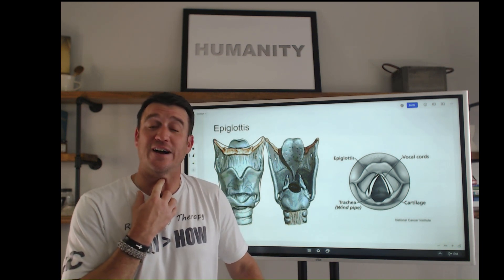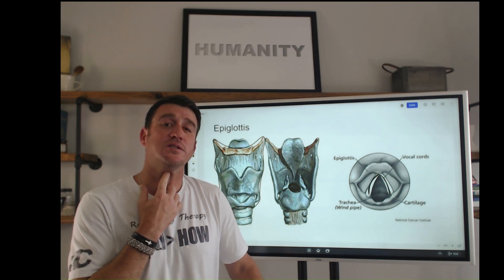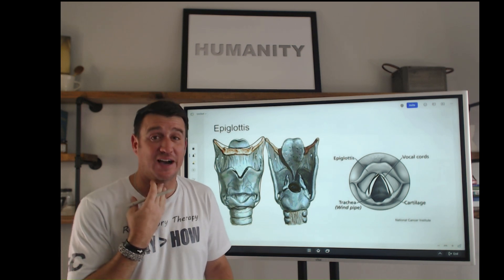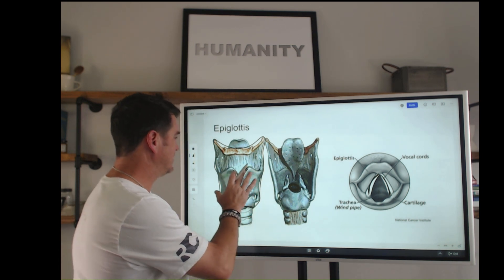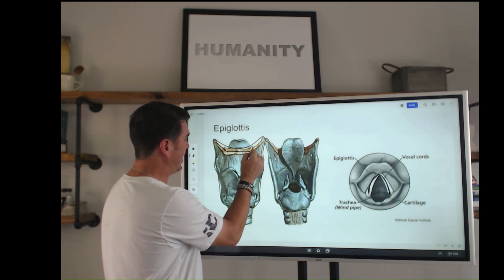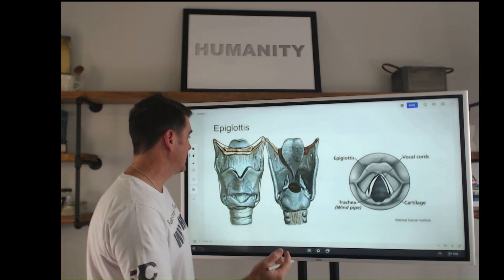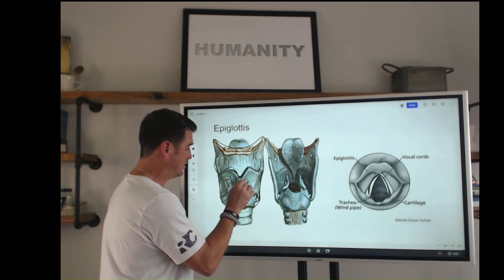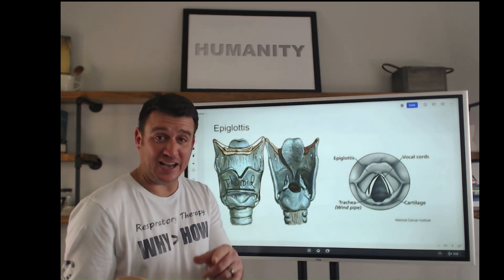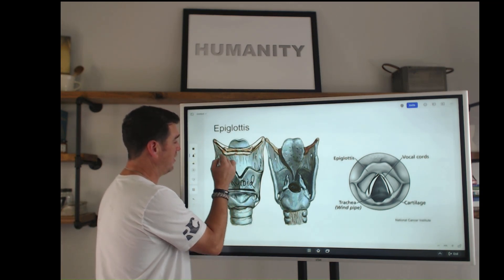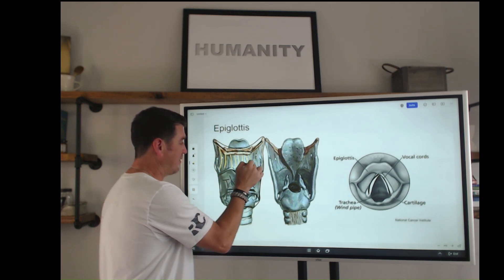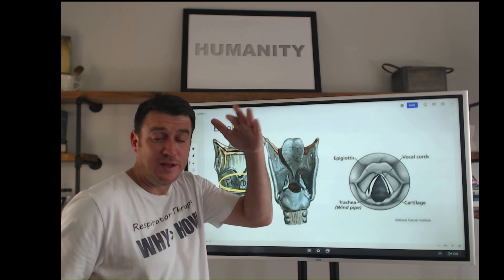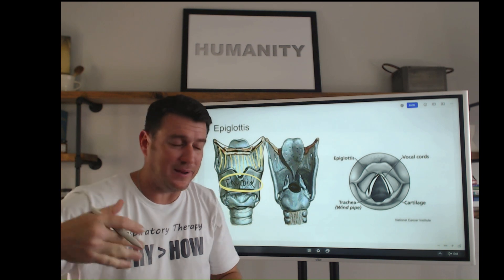You can feel the larynx on yourself — if you identify your Adam's apple and touch it, you can feel a depression, which is this dip right here. Now let's talk about the specific structures. The bone at the top is the hyoid bone, which supports the base of the tongue. The middle cartilage is the thyroid cartilage. The thyroid cartilage is connected to the hyoid bone by a membrane called the thyroid membrane.